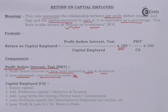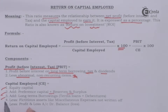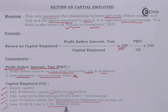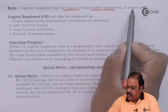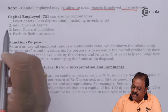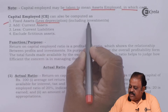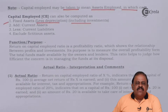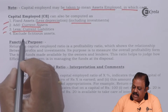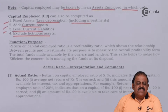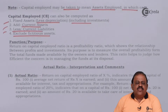Capital employed can be calculated as: equity capital plus preference capital plus reserves and surplus plus long-term borrowings, term loans and debentures, less fictitious assets like miscellaneous expenses not written off, and less the debit balance of profit and loss account. Capital employed may also be taken to mean assets employed, in which case it can be computed as fixed assets less depreciation including investment, add current assets less current liabilities, excluding fictitious assets.